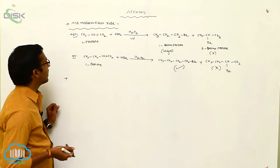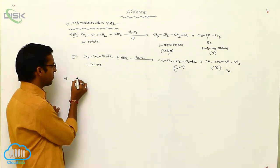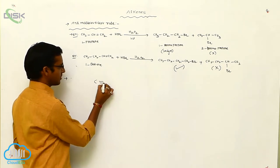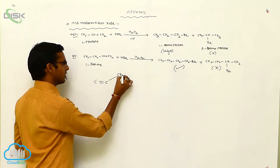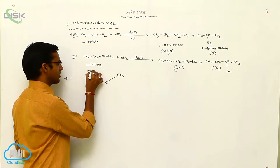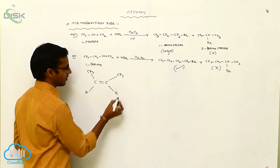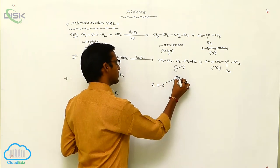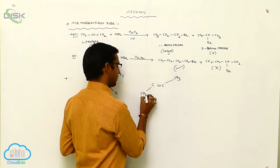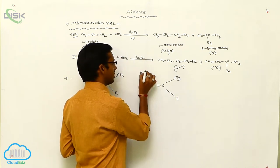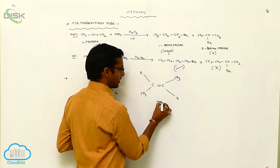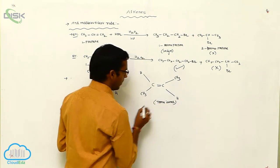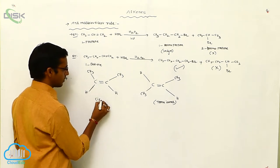The cis alkene and trans alkene can be identified using the following test. For example, consider a C double bond C structure: with CH3 and H on one carbon and CH3 and H on the other. When identical groups are on opposite sides, that is the trans isomer. When identical groups are on the same side, that is the cis isomer.